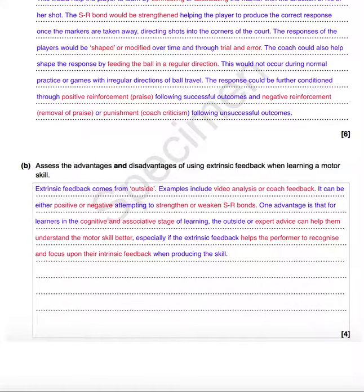That's all quite factual because I'm defining what extrinsic feedback is. Now we need to talk about the advantages. One advantage is that for learners in the cognitive and associative stage of learning, the outside or expert advice can help them understand the motor skill better. A good quality coach giving advice can help that learner to pick up the skill more quickly. This is especially the case if the extrinsic feedback helps the performer to recognise and focus upon their own intrinsic feedback when producing the skill — essentially giving a double benefit.